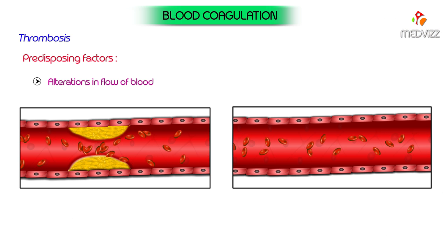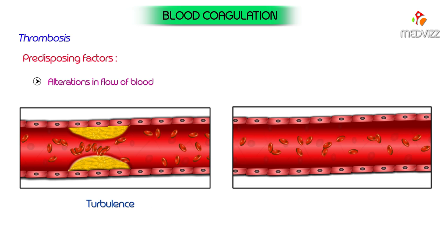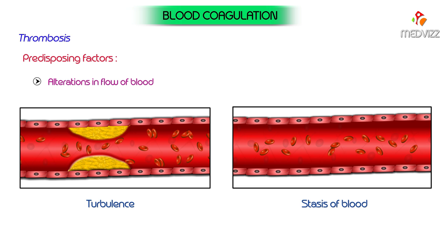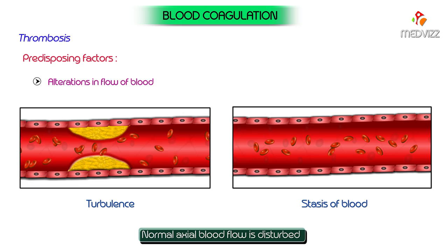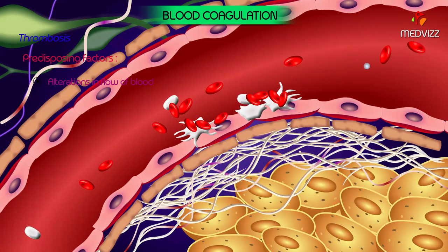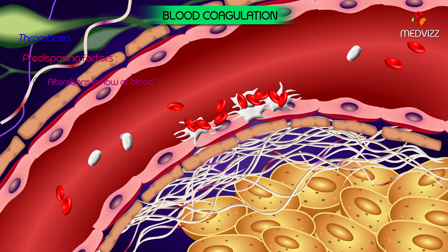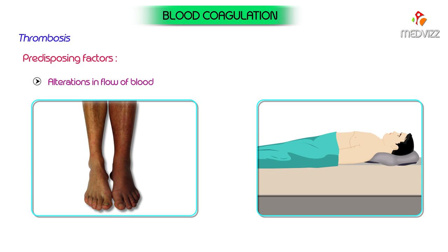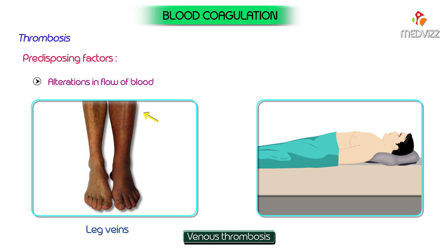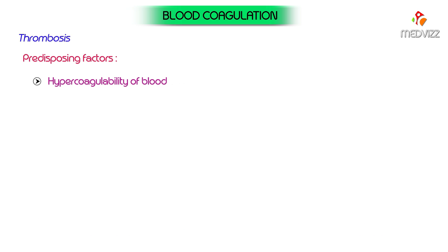Alterations in flow of blood: both turbulence and stasis of blood disturb the normal axial flow of blood, causing platelets to come in contact with endothelium and initiating thrombus formation. Stasis of blood is commonly associated with venous thrombosis, especially in the leg veins after major operations on the abdomen, or in bedridden patients in which muscular contraction in legs and trunk is decreased.